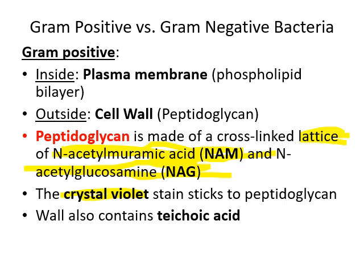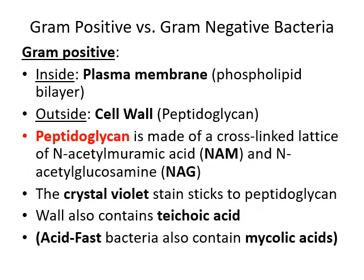In some cases the cell wall also contains teichoic acid. If the cell wall contains teichoic acid as well as mycolic acids — as in acid-fast bacteria — we have trouble staining it with the gram stain, and instead must use the acid-fast staining protocol.